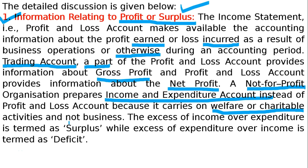यह कभी-कभी करोड़ों या 1000 करोड़ों में होता है, कभी कम level पर, कभी ज्यादा level पर — बहुत बड़े-बड़े organizations होते हैं. तो उनको income and expenditure account बनाना होता है. The excess of income over expenditure — अगर income ज्यादा होता है खर्चे से — it is termed as not profit but surplus. While excess of expenditure over income is termed as deficit. यह profit या loss नहीं होता है, यह surplus and deficit होता है for NPO — not for profit — या NGO, non-governmental organization.